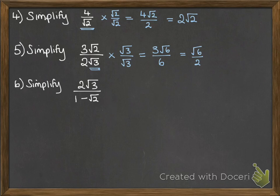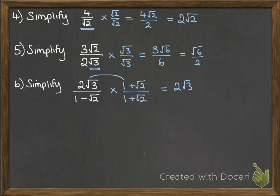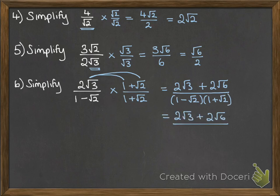Next one — we've got to rationalise that denominator. Remember, we do it by multiplying through by the conjugate. So instead of 1 minus root 2, we use 1 plus root 2. That means when we multiply it out, we've got a difference of squares happening and we'll eliminate the root 2s on the bottom. Multiplying through the top, we get 2 root 3 and 2 root 6. On the bottom, expanding that bracket, we end up with 1 minus 2. Simplifying, 1 minus 2 is minus 1. So divide all of the top by minus 1 and we get negative 2 root 3 minus 2 root 6.